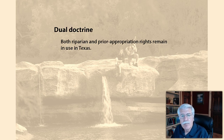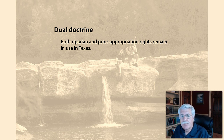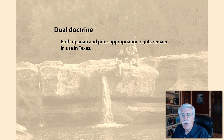Over time, these systems were merged with Texas becoming what's called a dual doctrine state. This recognizes both riparian and prior appropriation rights. Neither of the two systems of allocating water considers ecological needs of aquatic ecosystems or the direct connections between groundwater and surface water.